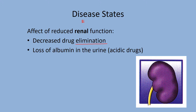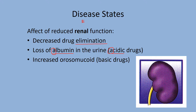Albumin is a blood protein that binds to acidic drugs — just use the alliteration: albumin is for acid. It's the blood protein that binds the most drug and regulates distribution. The opposite is orosomucoid — it binds basic drugs. So with renal issues, you're going to get an increase of acidic drug activity but a decrease of basic drug activity.